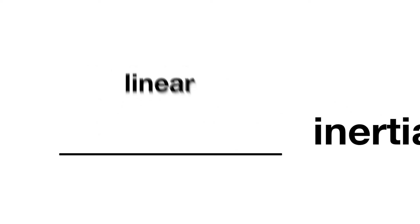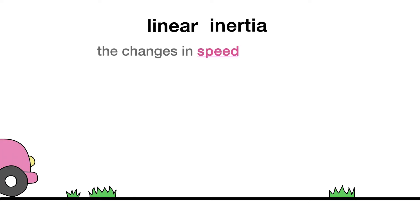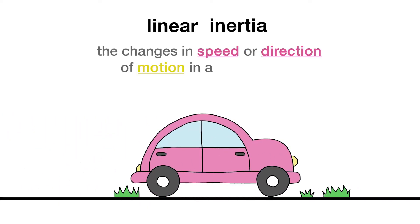Inertia exists in many forms. What we just described was linear inertia, which resists changes in linear motion, the changes in speed or direction of motion in a straight line.